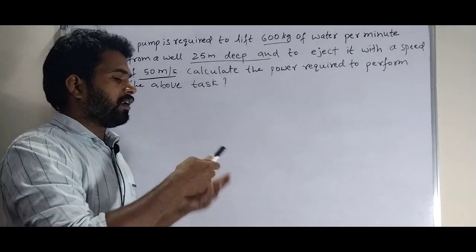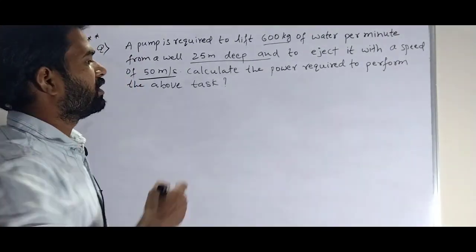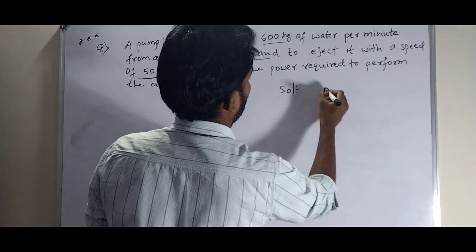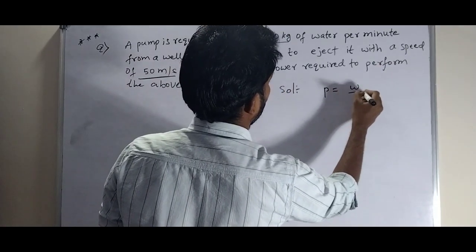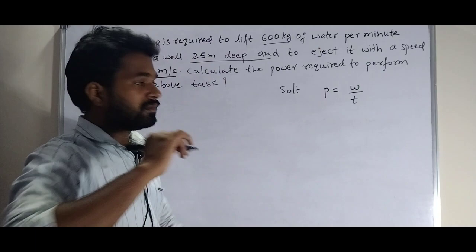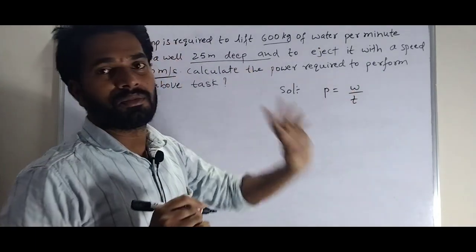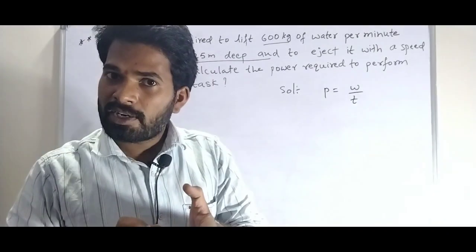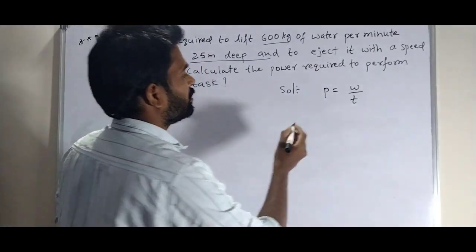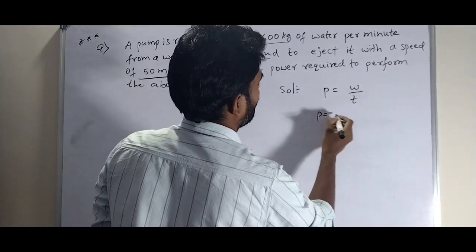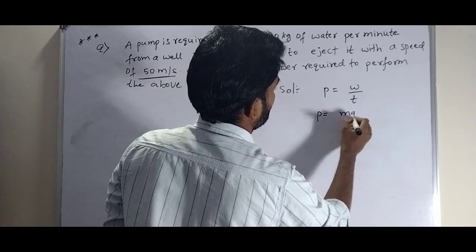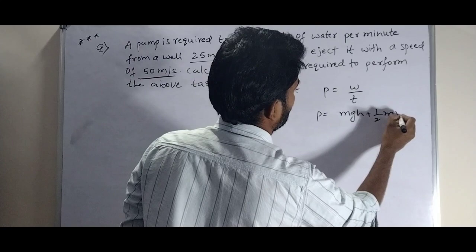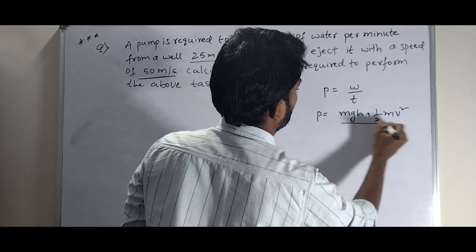In general, the power formula is P equals W by T. This is work done over time. Work done includes potential energy plus kinetic energy. So the formula becomes MGH plus 1 by 2 MV square, divided by T.